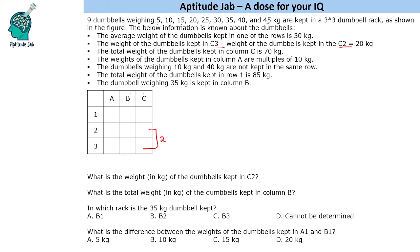So this difference is 20 kg - this is the higher value, this is the lower value. The total weight of the dumbbells kept in column C is 70 kg. So column C total is 70.